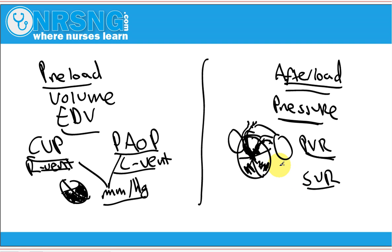So that's essentially the difference between preload and afterload. Preload is our volume — the end diastolic volume, the volume sitting in the ventricles at the end of diastole, measured as a pressure inside the ventricles. Afterload is the pressure against which the ventricles are going to have to pump in order to get blood out of the heart.